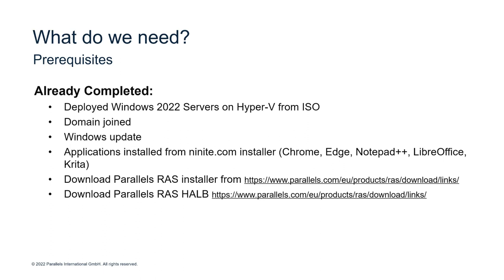Here's what I've already completed: I've deployed two Windows Server 2022 VMs on my Hyper-V server from an ISO, domain joined them, and performed Windows Updates. I've installed some base applications like Chrome, Edge, Notepad, and LibreOffice so I can demonstrate publishing applications in the video. I've also downloaded the Parallels RAS installer and the latest version of the HALB.